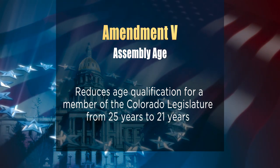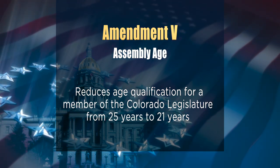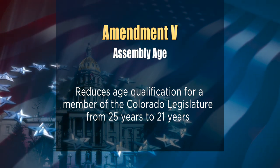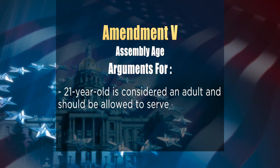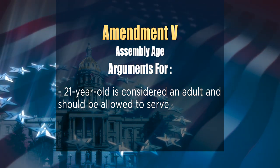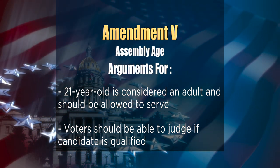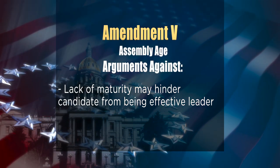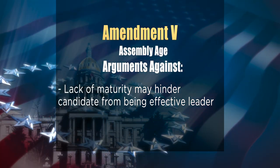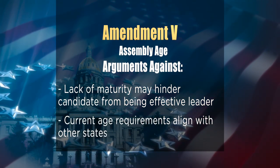Let's start with the state issues, going in ballot order. First up are the questions referred by state legislators. The first of these is Amendment V, concerning the age of Assembly members — the members of the Colorado House and Senate. Amendment V asks if there should be an amendment to the Colorado Constitution to reduce the age qualification for a member of the Colorado Legislature from 25 years to 21 years. Proponents say an individual who is 21 is considered an adult under the law and therefore should be allowed to serve in the state legislature, and that voters should be able to judge whether a candidate is qualified.